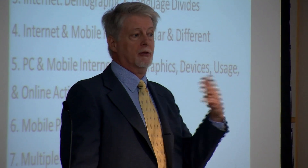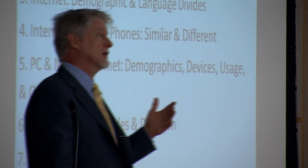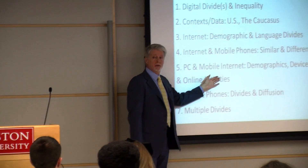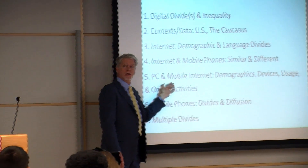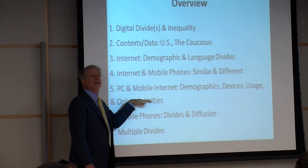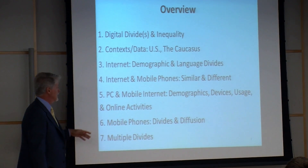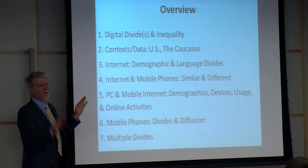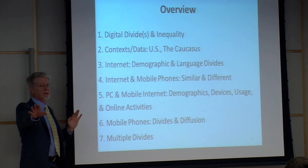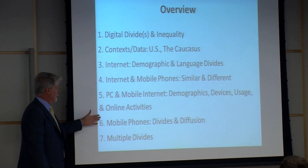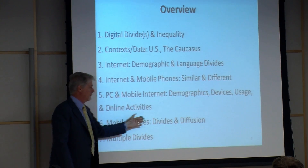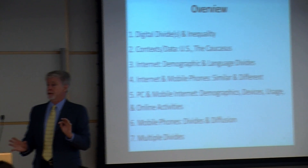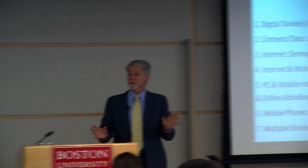Those factors then influence online activities, because the kinds of things you do on the internet affect what benefits or outcomes you get from it. There's a question about whether there's a difference in the things that influence activities — so it looks like you're using the internet, but some people don't get as much benefit as others. And then there's an overtime analysis of the diffusion of mobile phones, which we can add on to the digital divide model.